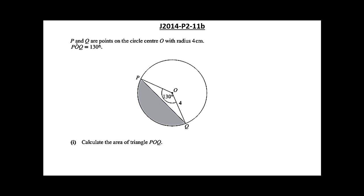P and Q are points on the circle center O with radius 4 cm. Angle POQ is 130 degrees. All this information is given in this question.